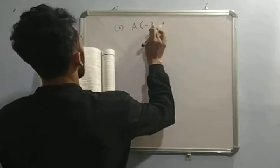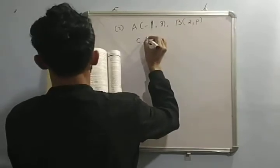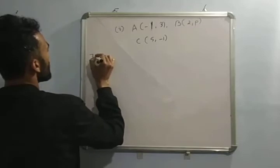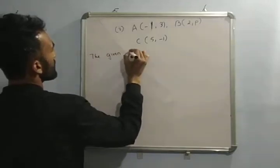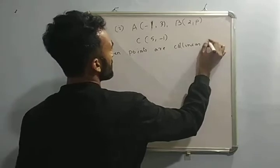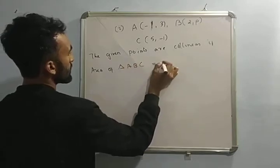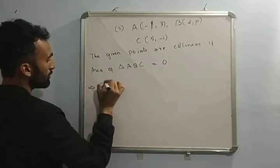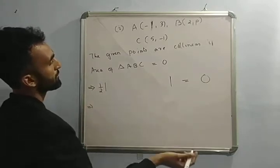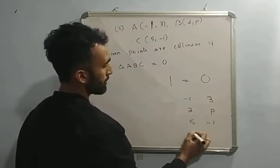Sub number 1: A is minus 1 comma 3, B is 2 comma P, C is 5 comma minus 1. I have to find out P only. The given points are collinear. If area of triangle A, B, C equals to 0, which implies half mode equals to 0. The values are: minus 1, 3; 2, P; 5, minus 1; minus 1.